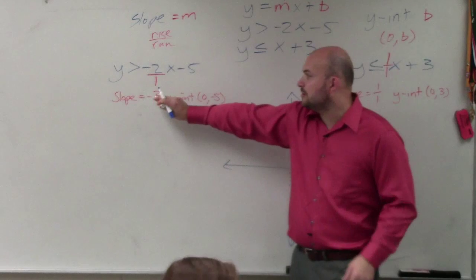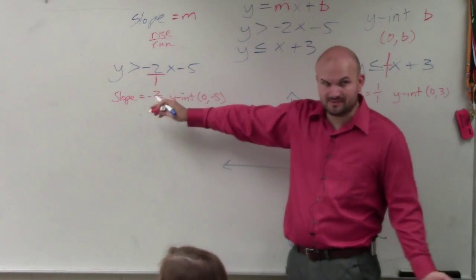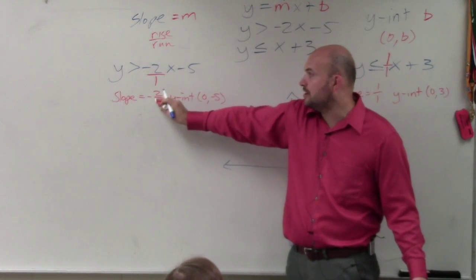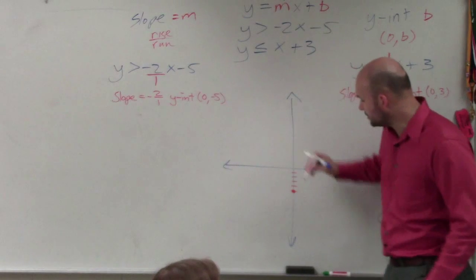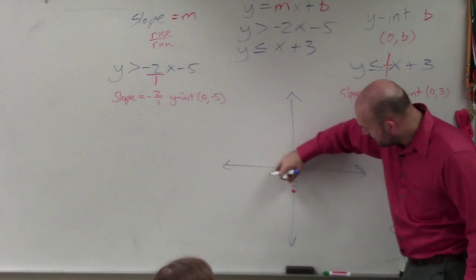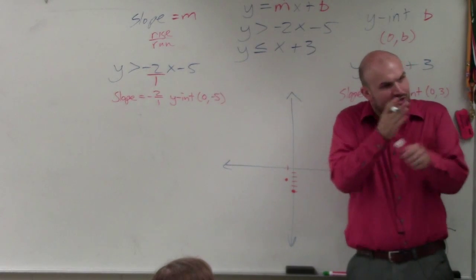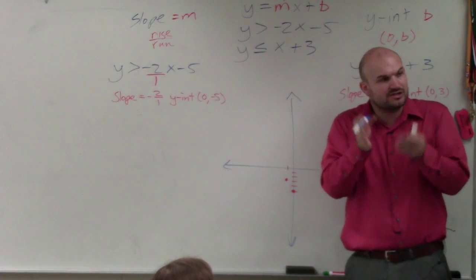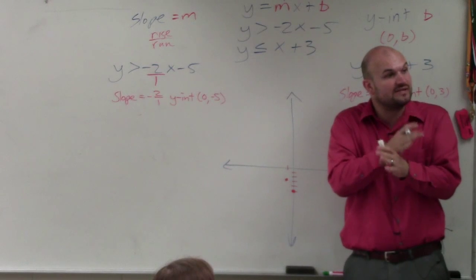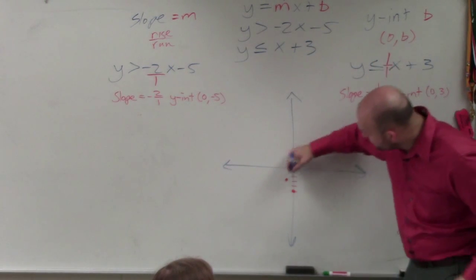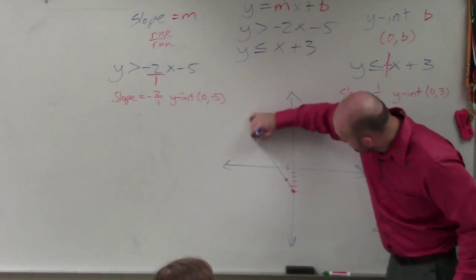Then I follow my slope, where the negative can be up top or on the bottom. Doesn't matter. It can be down 2 over 1, or it can be up 2 to the left 1. I'm going to go up 2 to the left 1. Now, when graphing inequalities, we're not concerned about where the two lines intersect. We're concerned about where their feasible regions intersect. So I'm just going to connect two points.